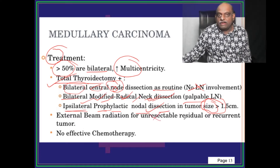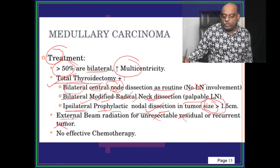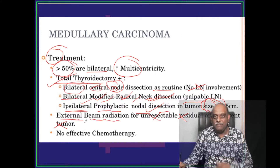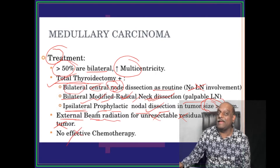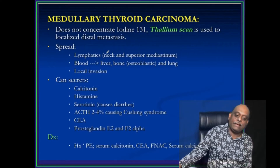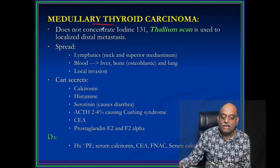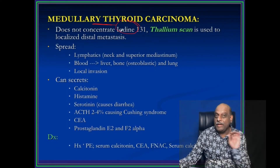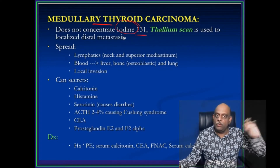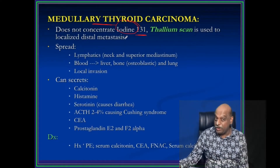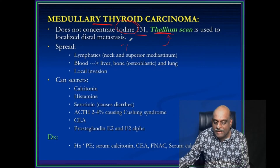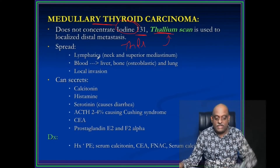If there is an unresectable, residual, or recurrent tumor, you need to do external beam radiation. Medullary carcinoma of thyroid — chemotherapy is not effective; that is what you need to remember. Medullary thyroid carcinoma does not concentrate I-131 iodine. Normally we use I-131 to pick up metastases, but that is not effective for medullary thyroid carcinoma. So we use the thallium scan to identify distal metastasis.